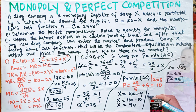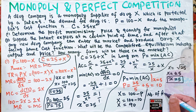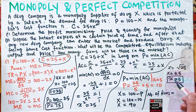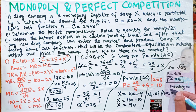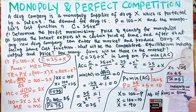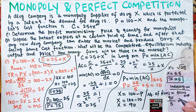Now we need to find the number of firms. If the industry produces 90 units total and each firm produces 5 units, then the number of firms equals industry output divided by each firm's output.